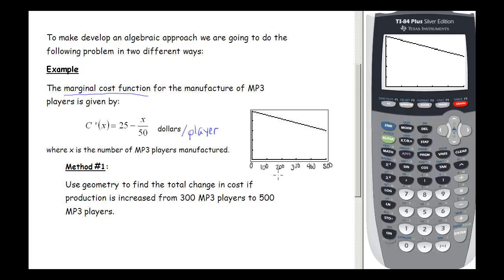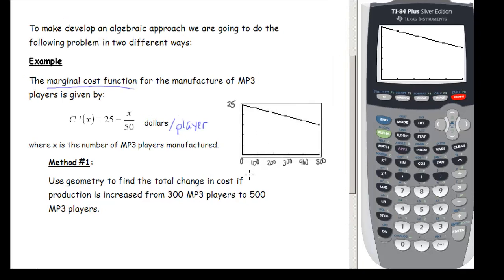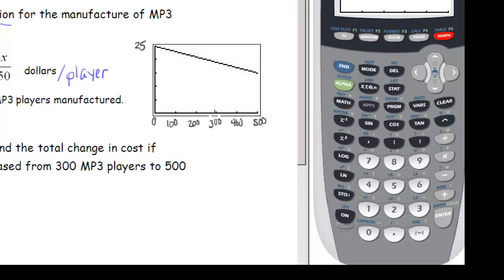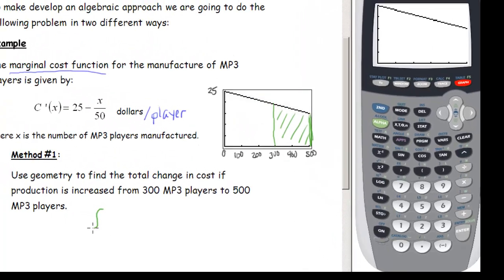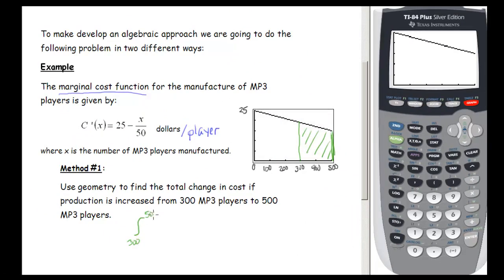The graph shows the marginal cost function with the x-axis labeled and y value up to 25. We're looking for the area between the marginal cost function and the x-axis between 300 and 500. Drawing the sides of our region, we can see this area is a trapezoid. The notation for this is the integral from 300 to 500 of c prime of x dx, and this equals the area of that trapezoid. The formula is one half times the base.